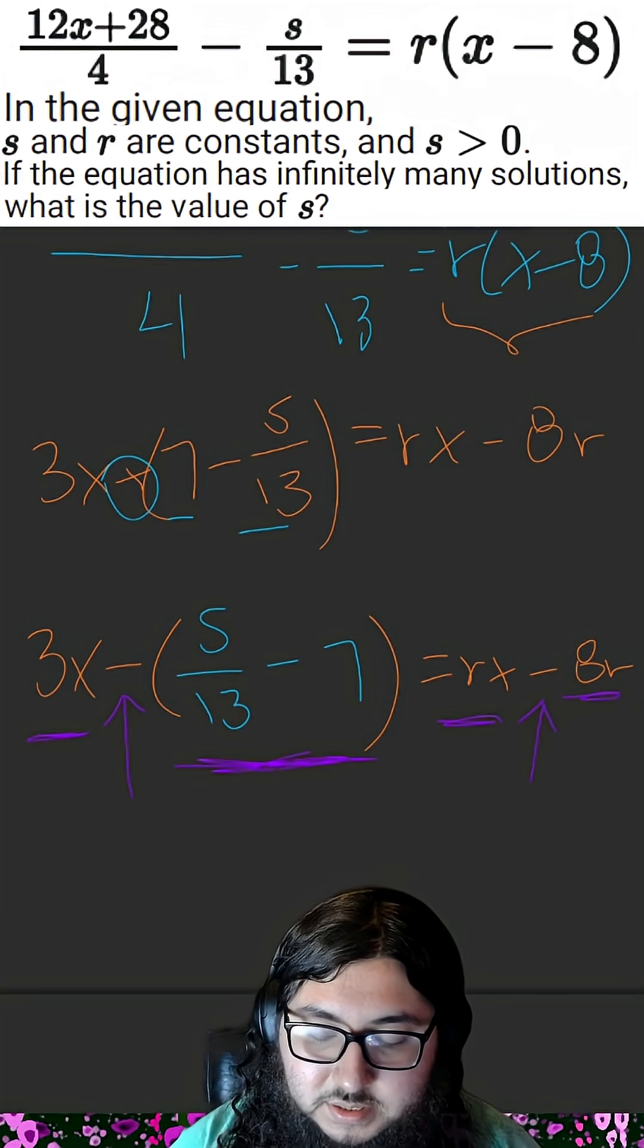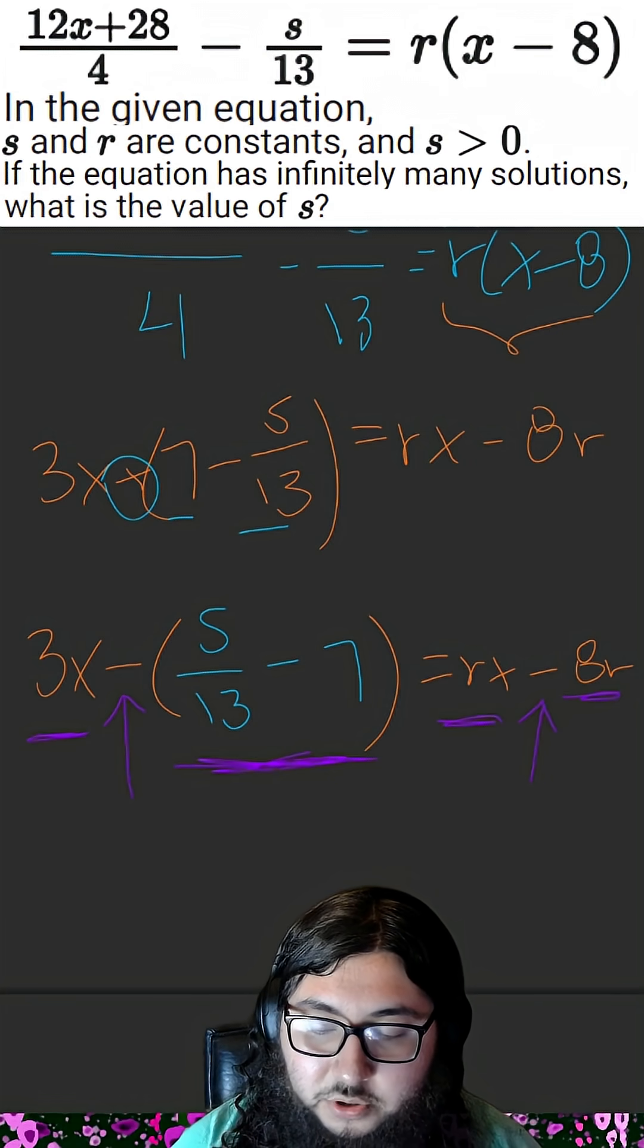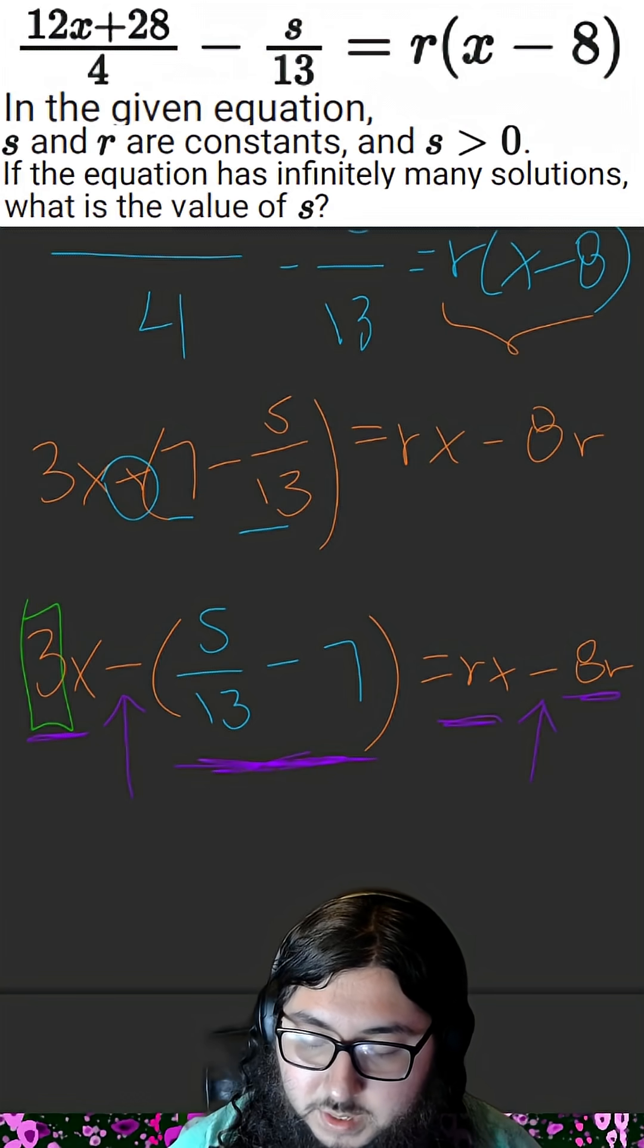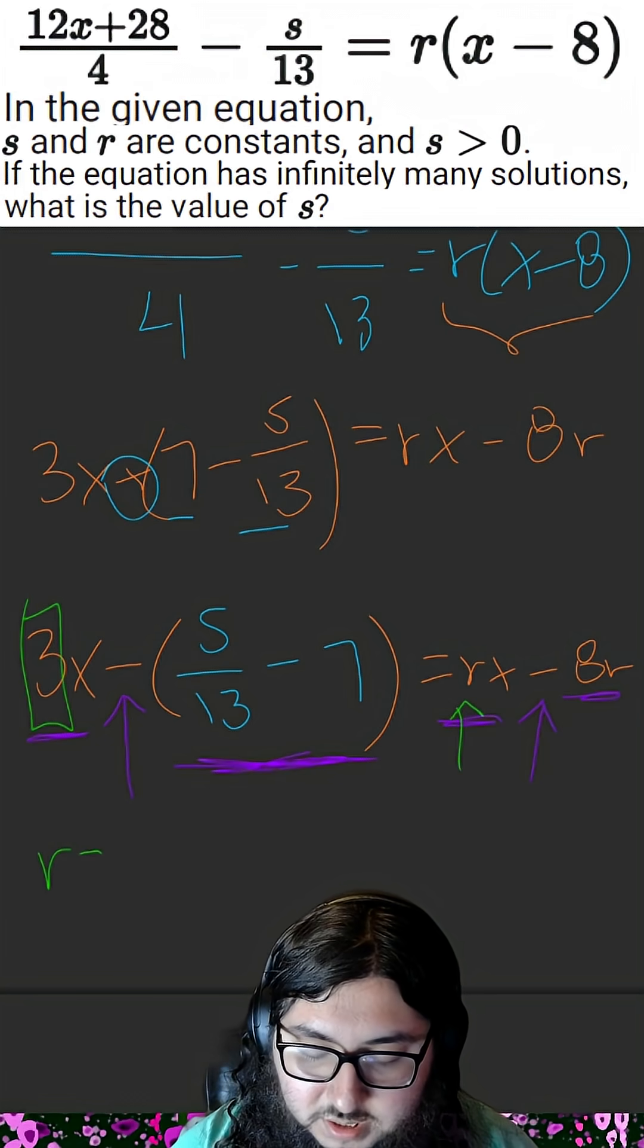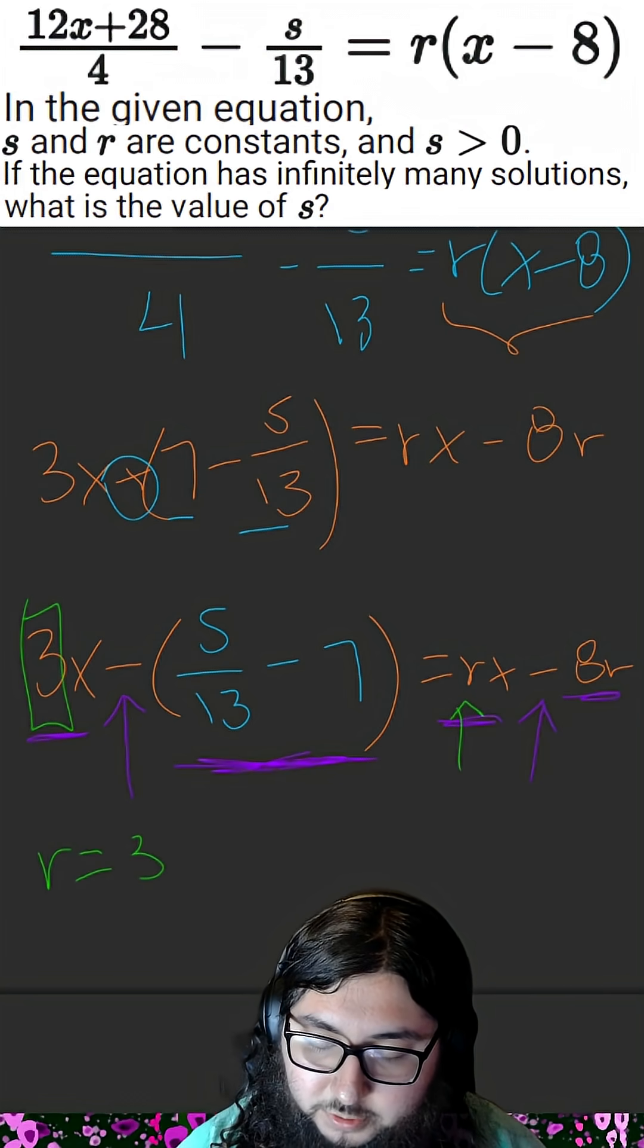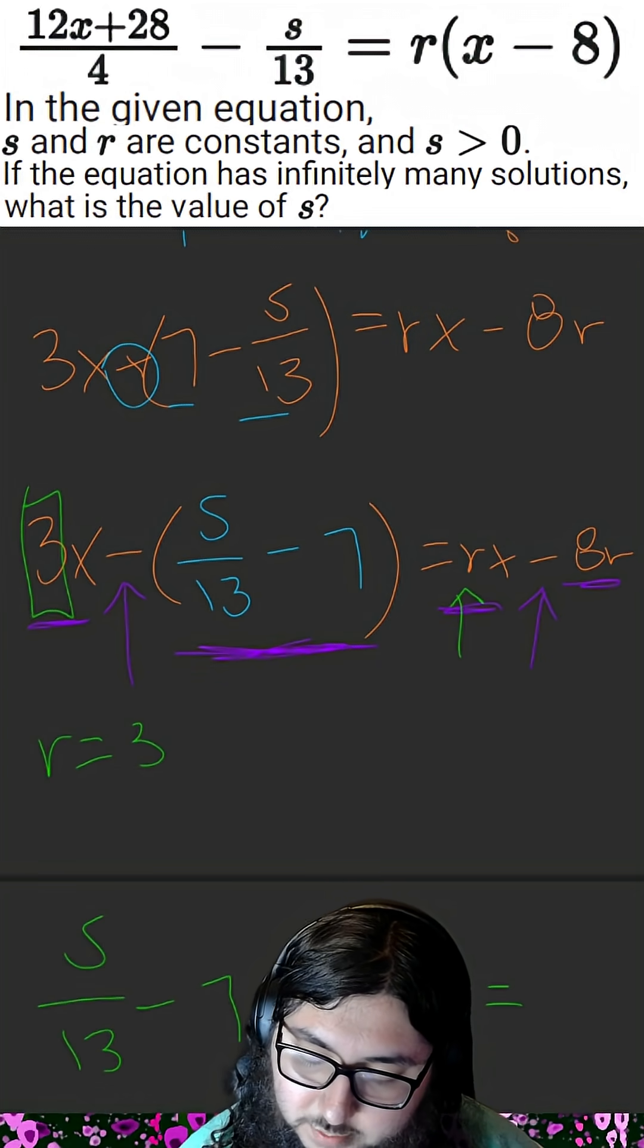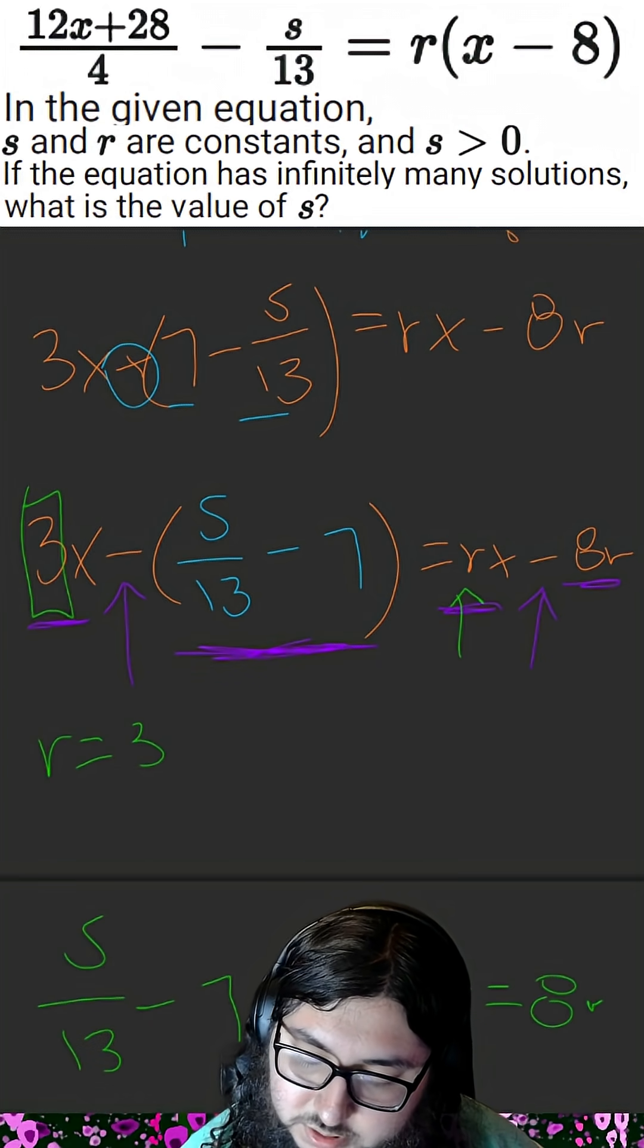So what we're saying, since 3x is the only term that has x as a variable, is that this coefficient 3 is r. So r is equal to 3, and s over 13 minus 7 is equal to 8r, which we established is 3.